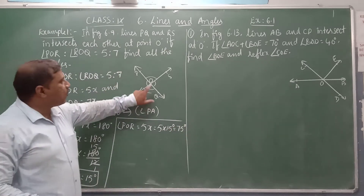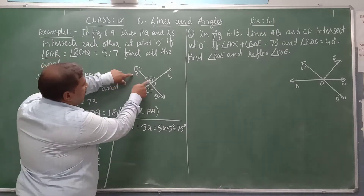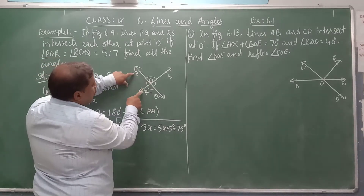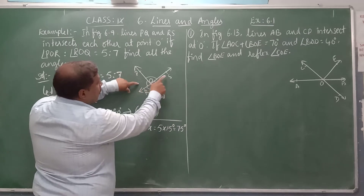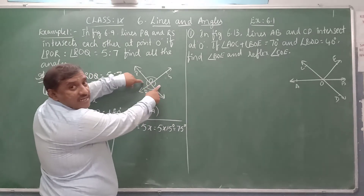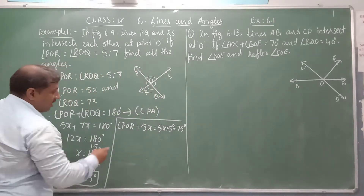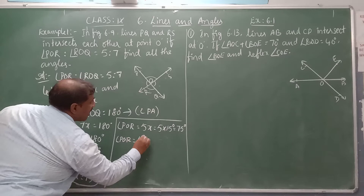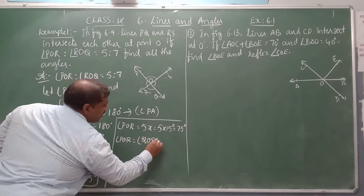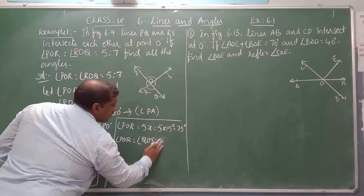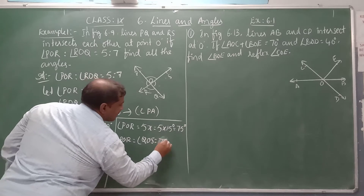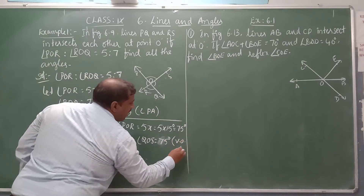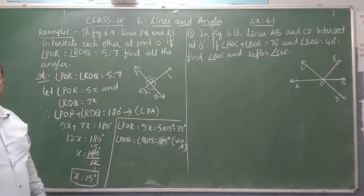Now what about angle QOS and POR? Please look at the figure. Angle POR and angle QOS — both are vertically opposite angles and therefore they are equal. Angle POR equals angle QOS, which is 75 degrees. Why 75 degrees? Vertically opposite angles.